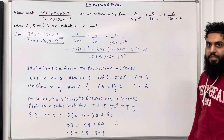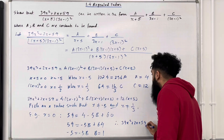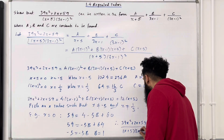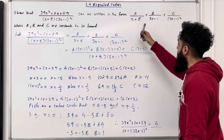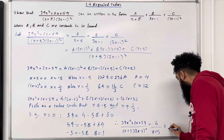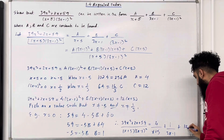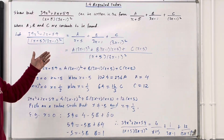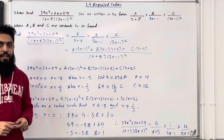Therefore, (39x² + 2x + 59) / [(x + 5)(3x − 1)²] = 4/(x + 5) + 1/(3x − 1) + 12/(3x − 1)². That completes this teaching video on 1.4 repeated factors. If you found this video useful, please subscribe, leave a like, leave a comment, and turn on your notification bell so you receive notifications every time I post a teaching video.